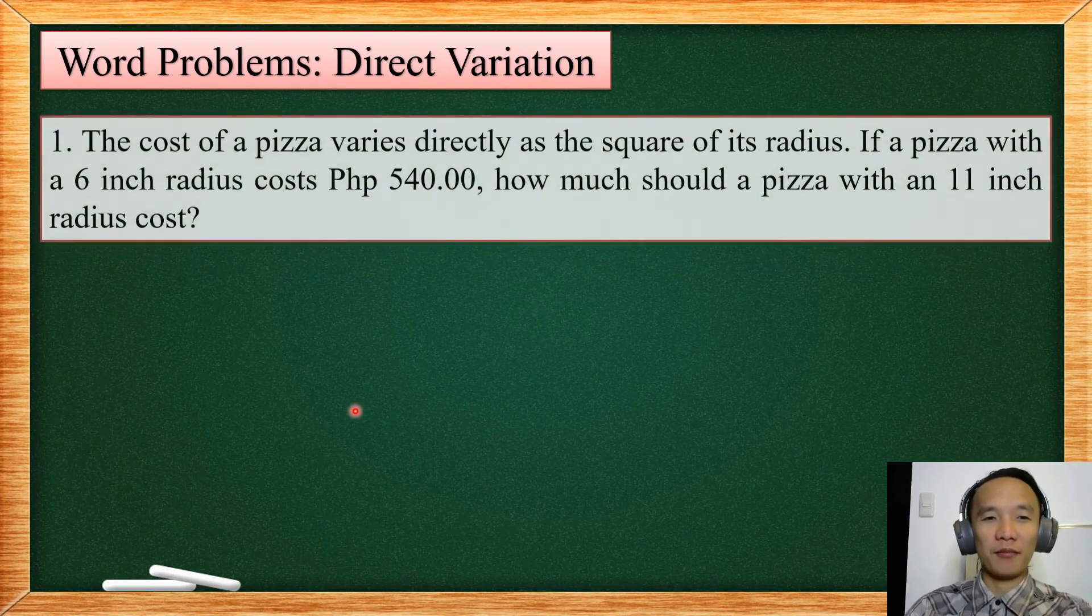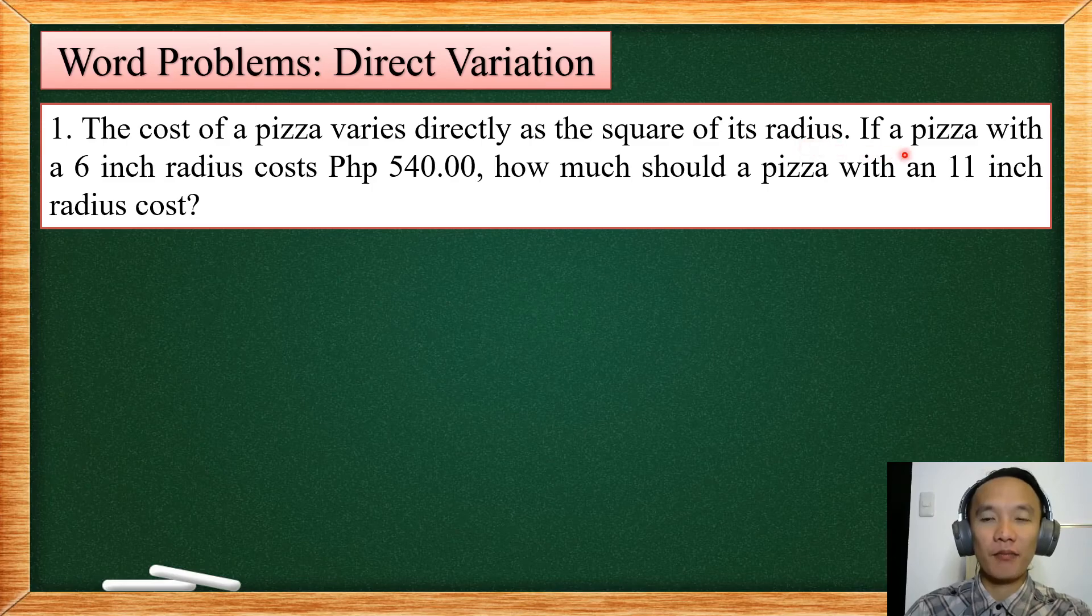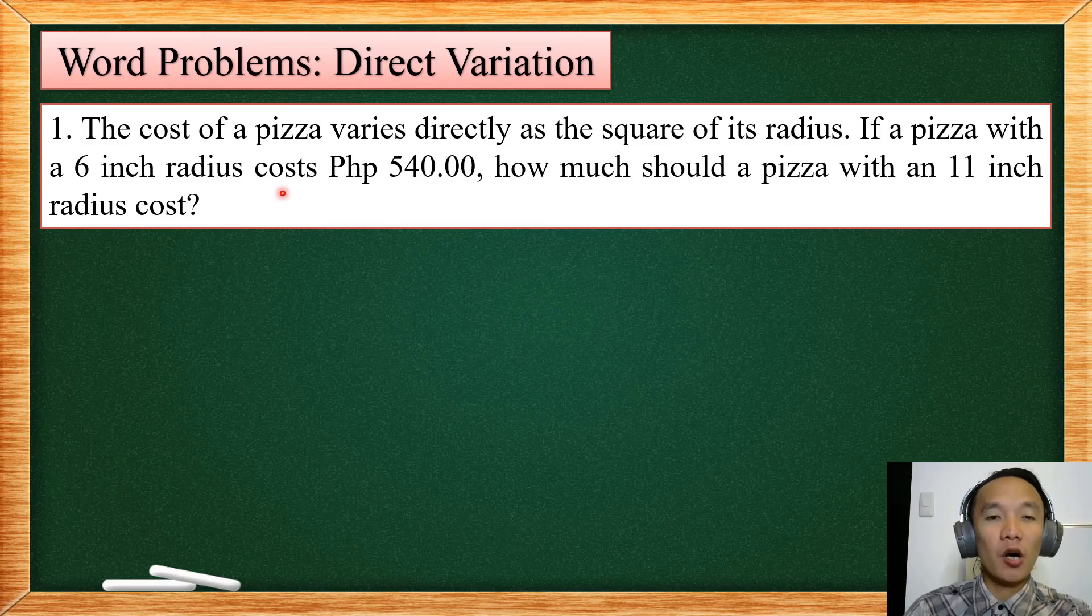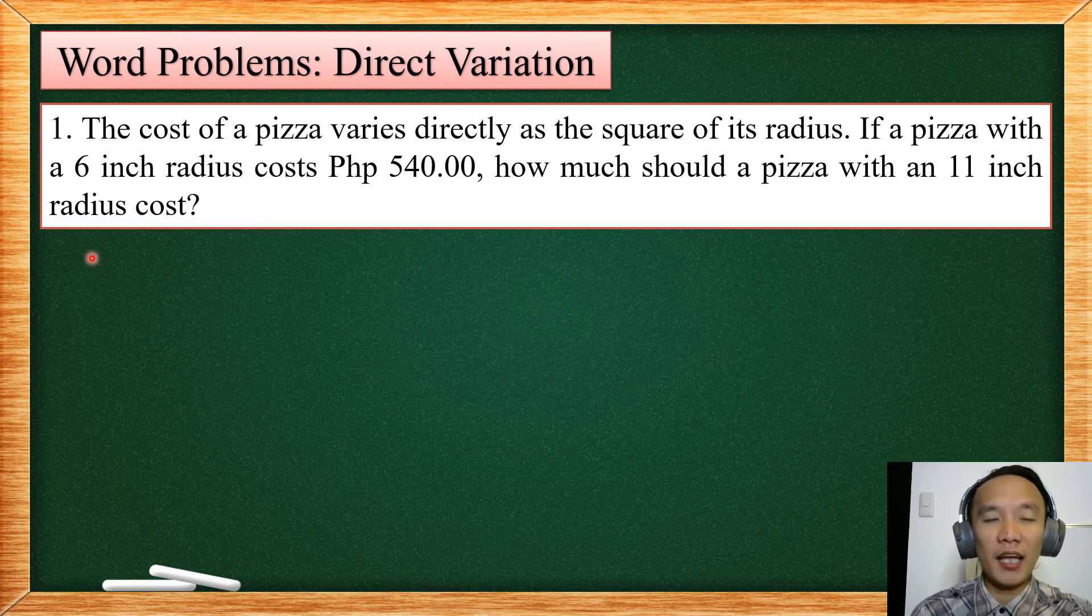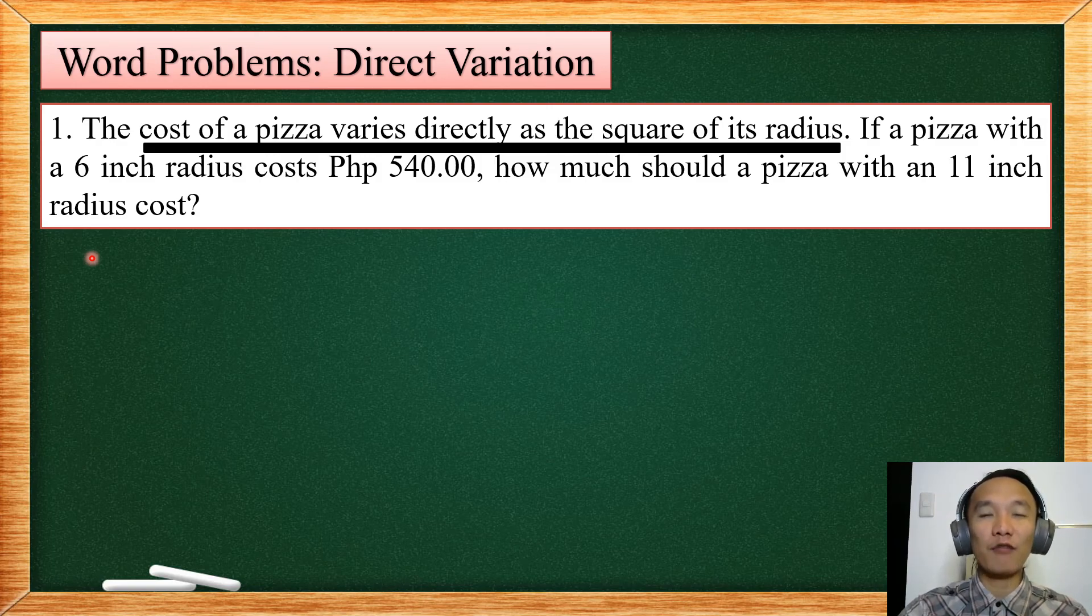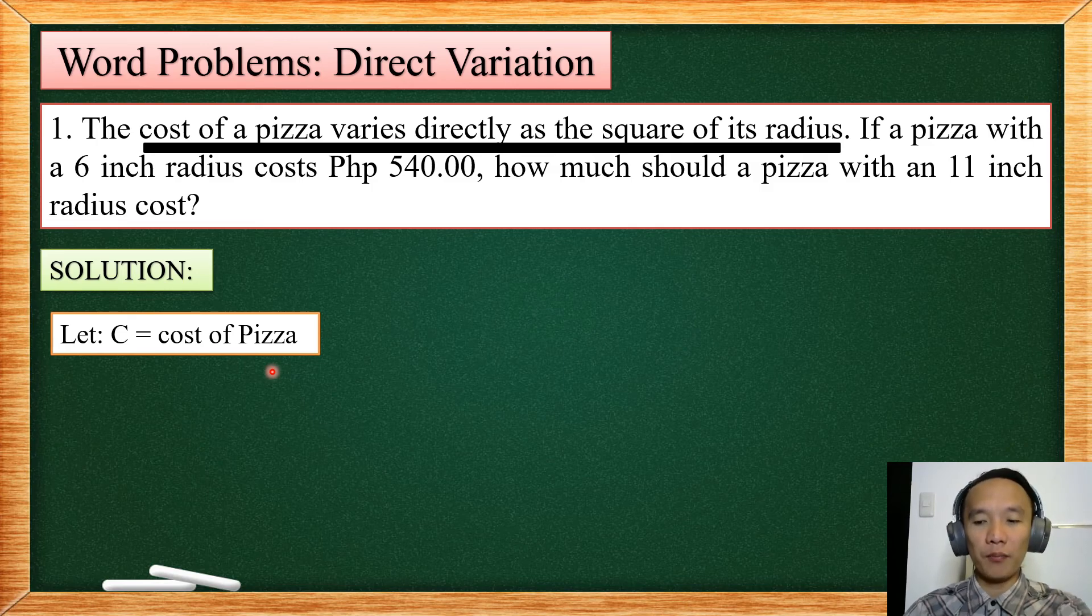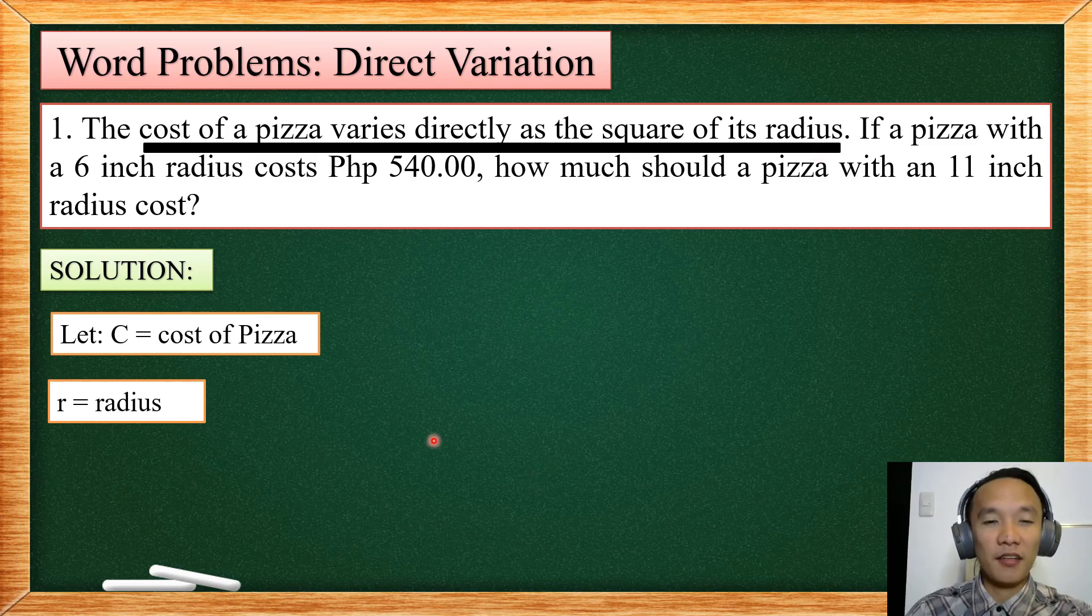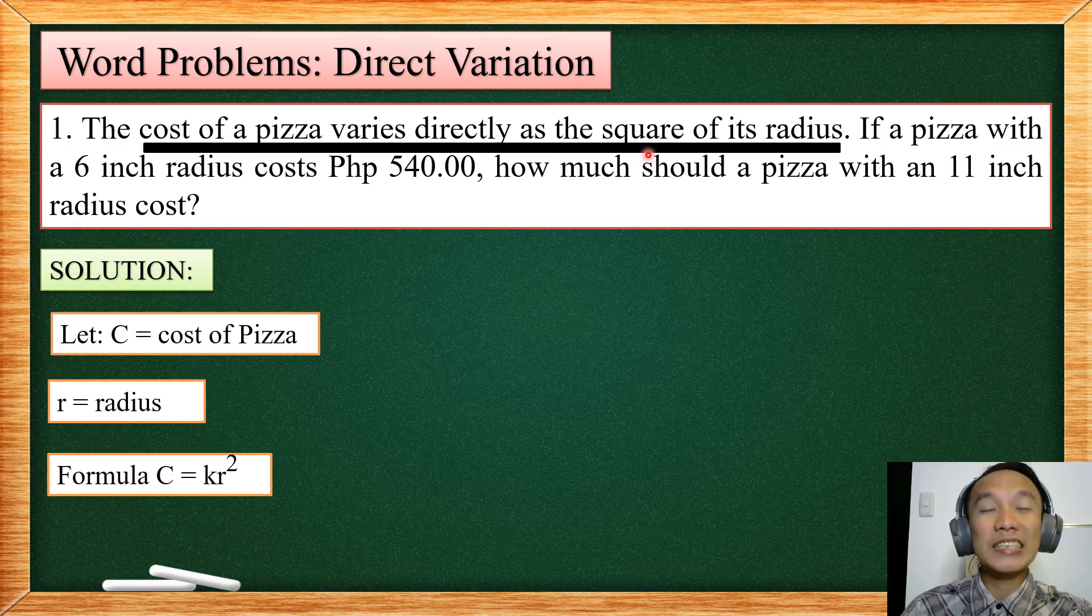Let us now have a word problem. The cost of pizza varies directly as the square of its radius. Now, if a pizza with a 6 inches radius costs 540 pesos, how much should a pizza with an 11 inch radius cost? So first thing to identify here is the important words. So the cost of pizza varies directly as the square of radius. We will assign a letter for our important words. So the first one is we let C will be the cost or the price for our pizza. And we let R be our radius. Now, from the formula, the cost of pizza, so C equals to K, then it says here, square of its radius. So we will have R squared.